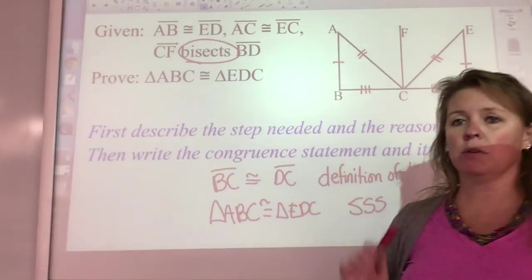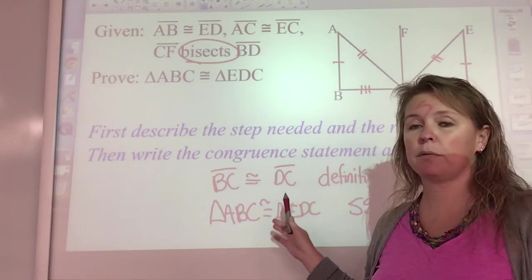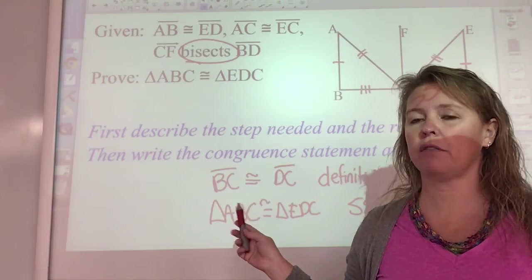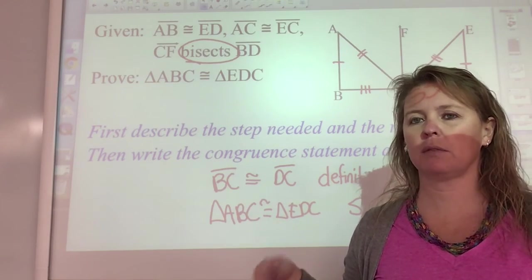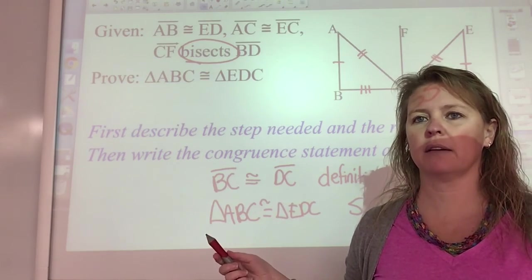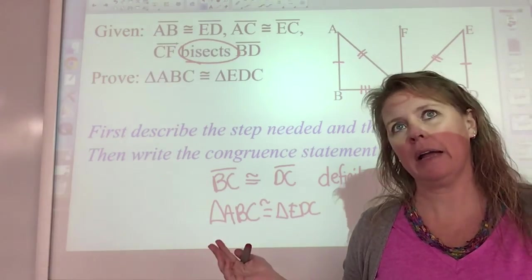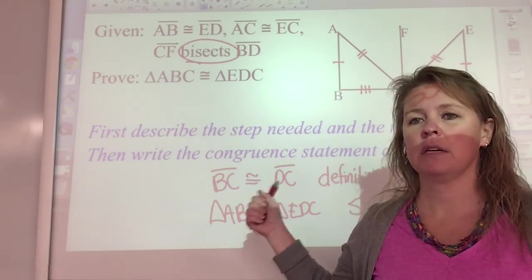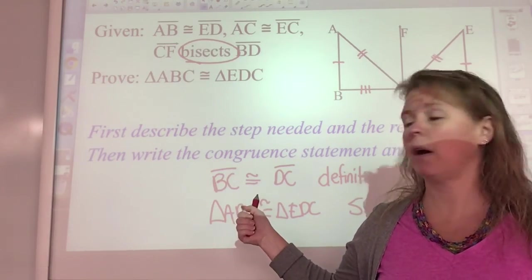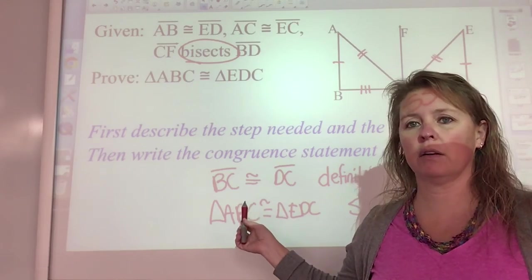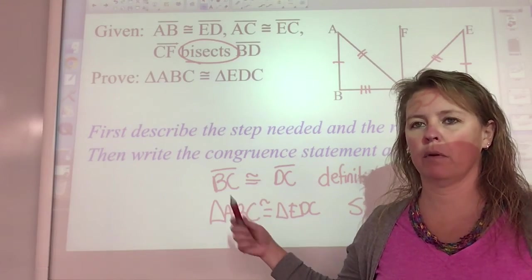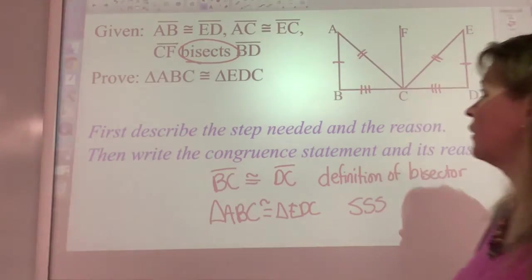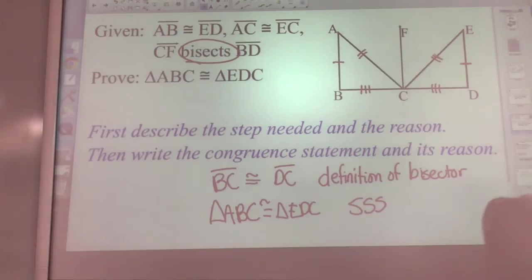Do your homework for this section. Get a good grasp of side-side-side because there are more. If you saw cheat sheet six, we still have side-angle-side, angle-side-angle, angle-angle-side, and HL left. Get side-side-side down before we move on. Get after the homework, section 4.4.